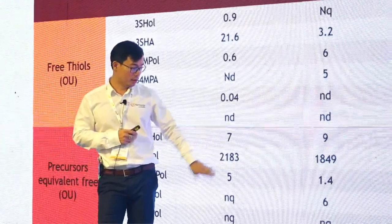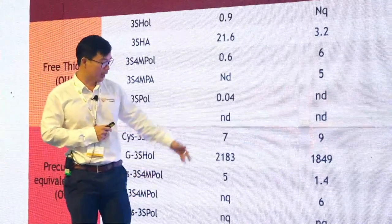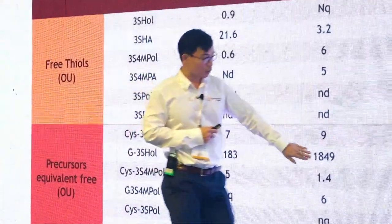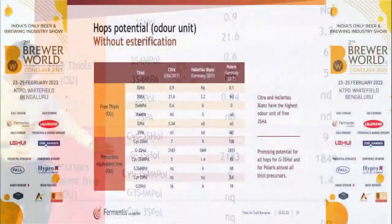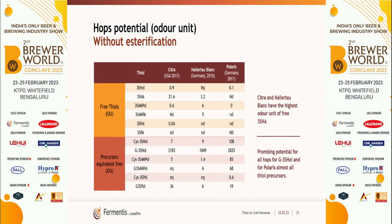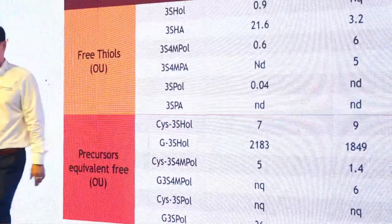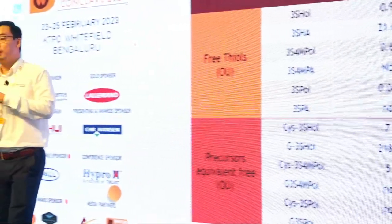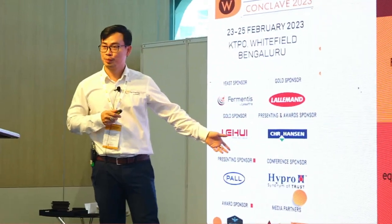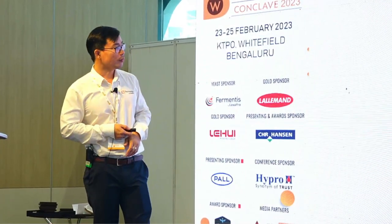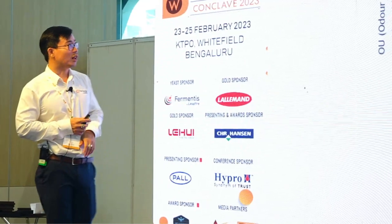The precursor — the bound form — is not giving you any benefit yet, but the yeast will help. Notice the very large precursor numbers for one hop. The glutathione-bound precursor is harder to release because it needs three enzymes, not just one beta-lyase. So we need to understand how to release this second precursor more effectively, because there is greater potential there.